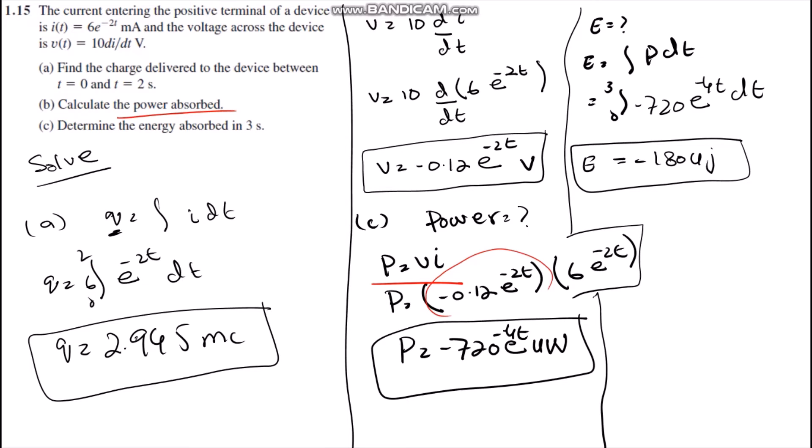In part B, the question demands to find or calculate the power absorbed by the element. We know the equation of power, which is P equals V times I. In the question, we have found the value of voltage and we are also given the value of current. We simply substitute the values of voltage and current into the equation, and after mathematical calculations we get the value of power, which is minus 720 e^(−t) microwatts.